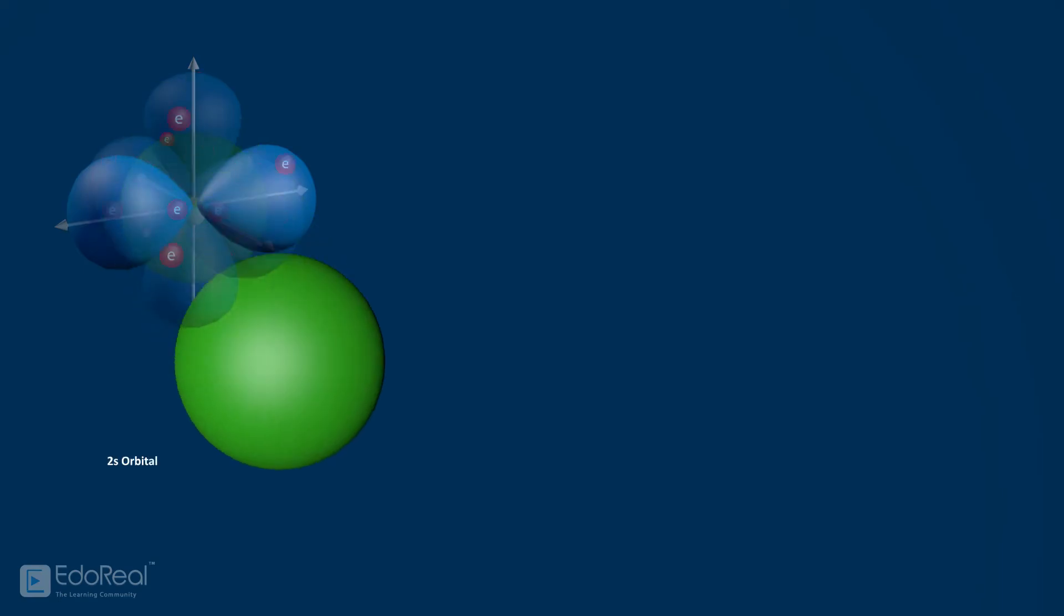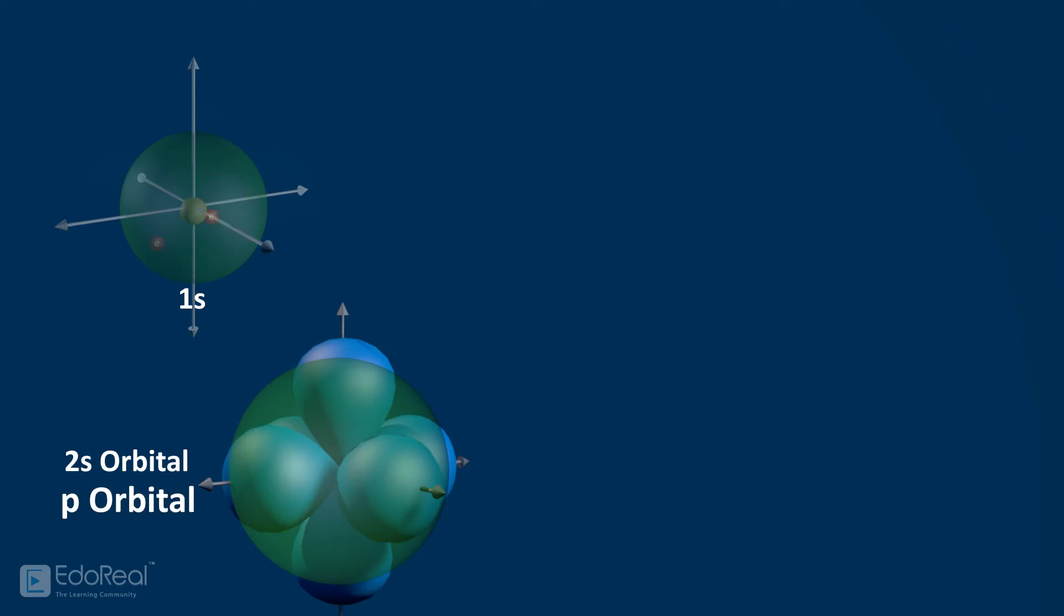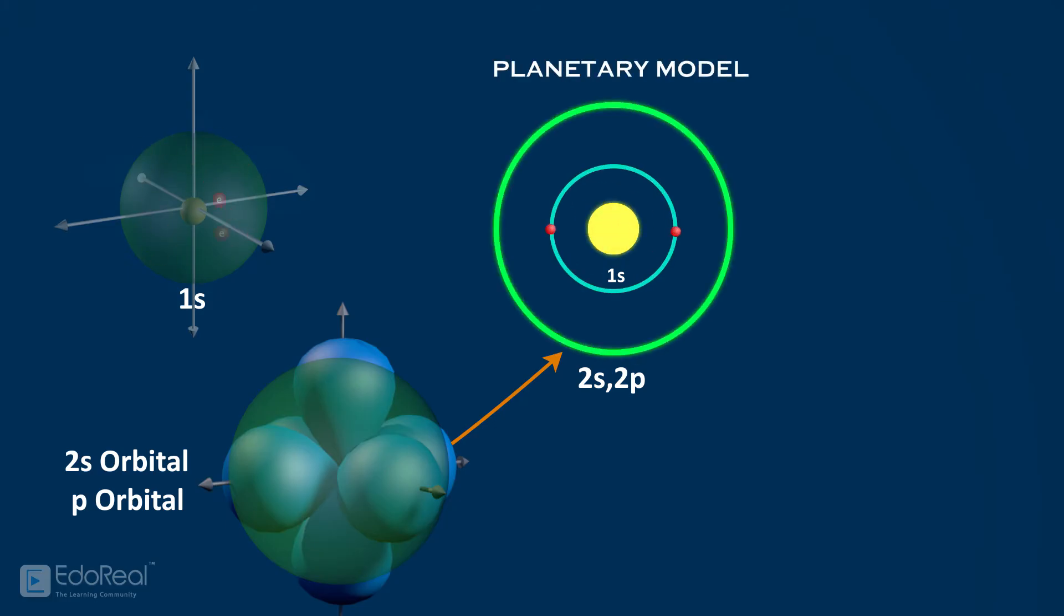As there is less energy difference between second s orbital and p orbital, these two orbitals are represented with single concentric circle in planetary model. This single concentric circle is represented with letter L and number 2, where 2 represents the second energy level or orbit.